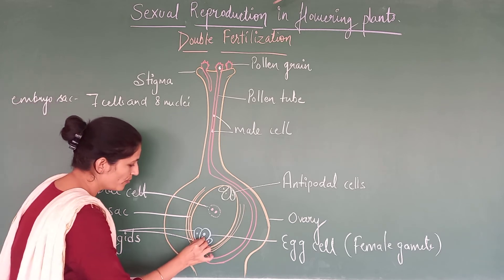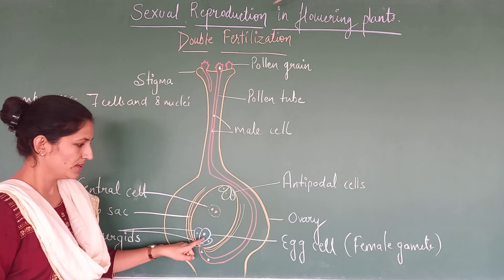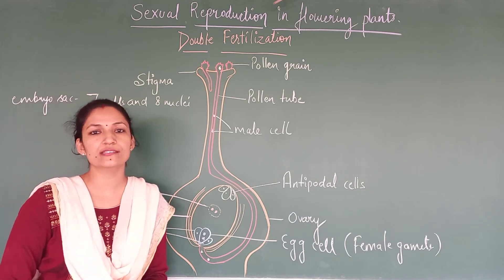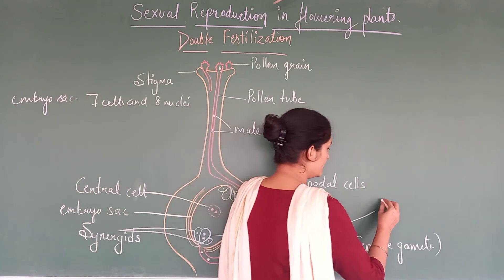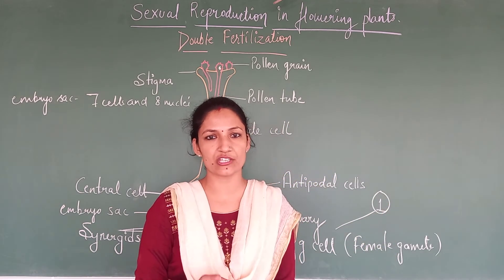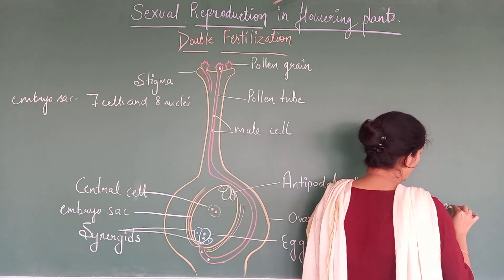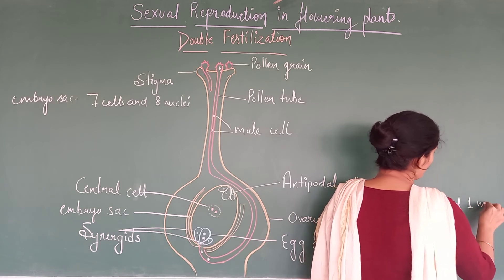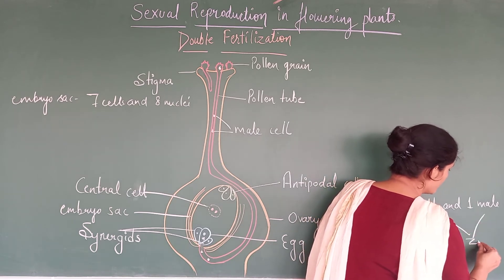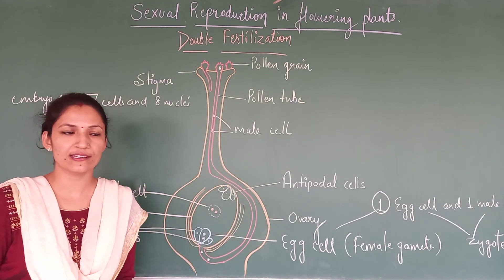The first male gamete will fuse with the egg cell. The egg cell gets fertilized by the nucleus of the male gamete. This process is called syngamy. So as it is double fertilization, fertilization will occur twice. The first fertilization is between the egg cell and one male cell, and what they are going to form — they are going to form a zygote. This process is fertilization or syngamy — that is the first fertilization.